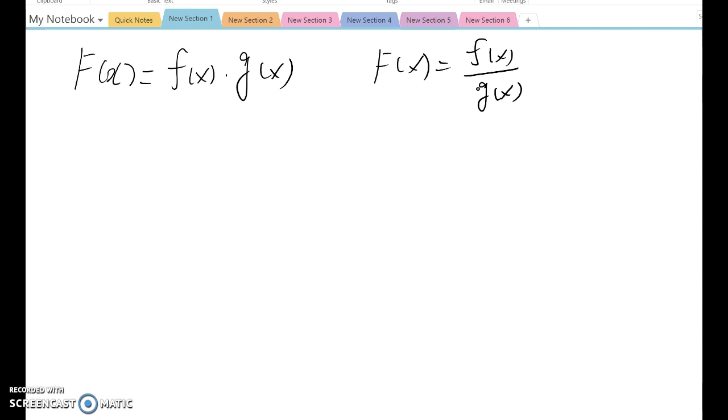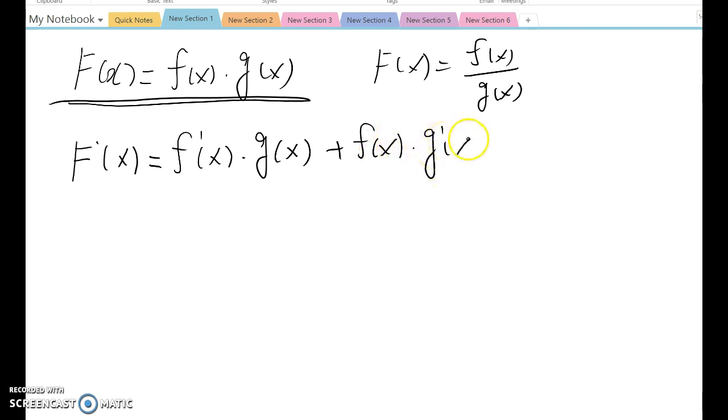If the function form is like this, then the derivative of this function equals f prime x times g x plus f x times g prime x. That will be the property, but this notation looks a little bit confusing and harder, so I'm going to simplify it a little bit more and keep utilizing different notation.